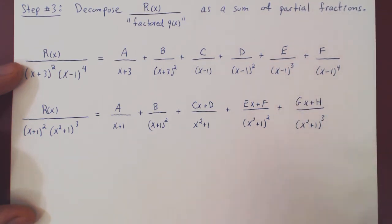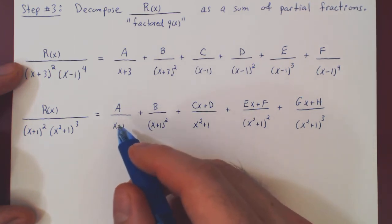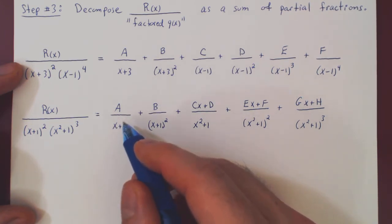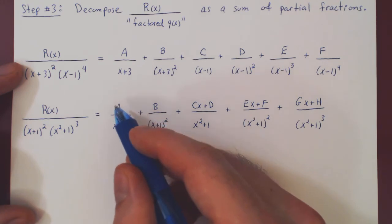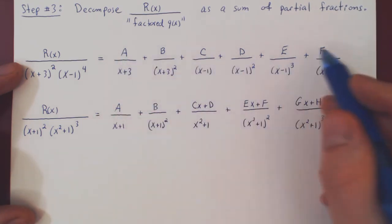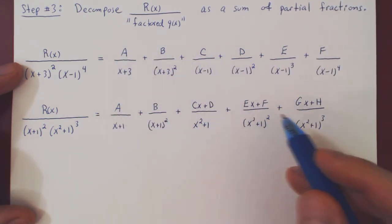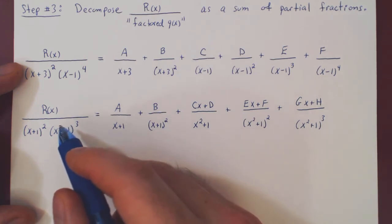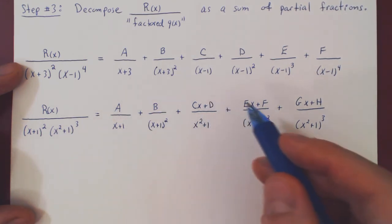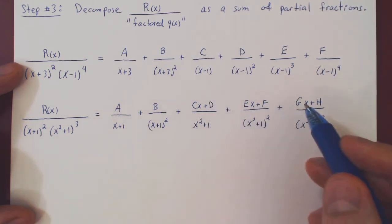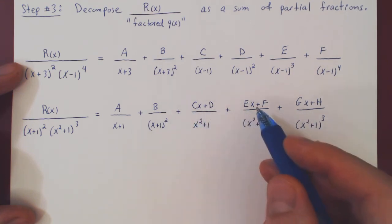And that is the only true difference: whenever a partial fraction originates from a linear factor, the numerator is a constant term. Whenever a partial fraction originates from an irreducible quadratic factor, the numerator has to be a linear polynomial — some multiple of x plus a constant.